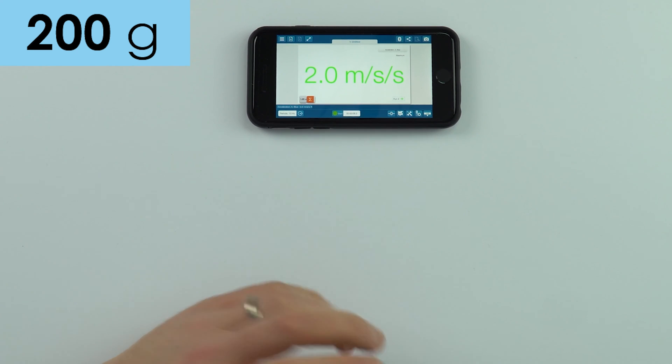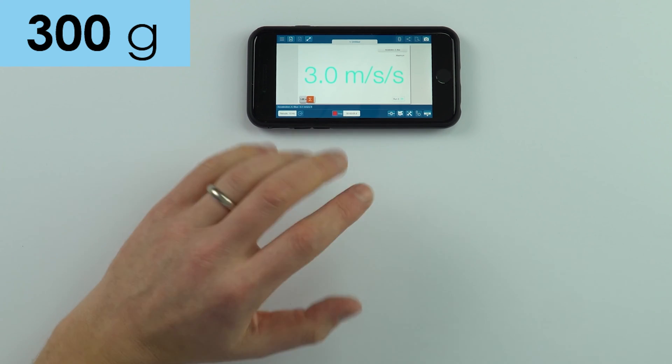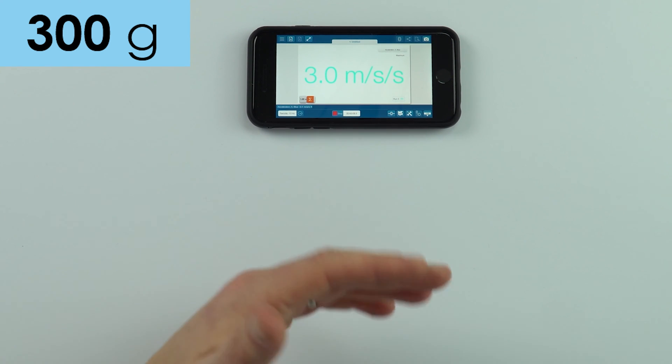I'm going to do the same for 300. That one gave a value of 3.0 meters per second squared. Data is looking pretty good so far, so we're now going to do it for 400, 500, and 600.